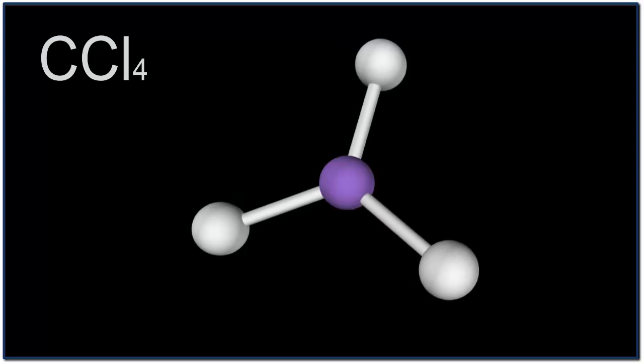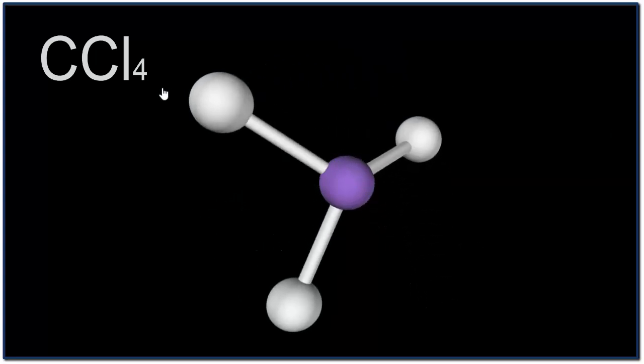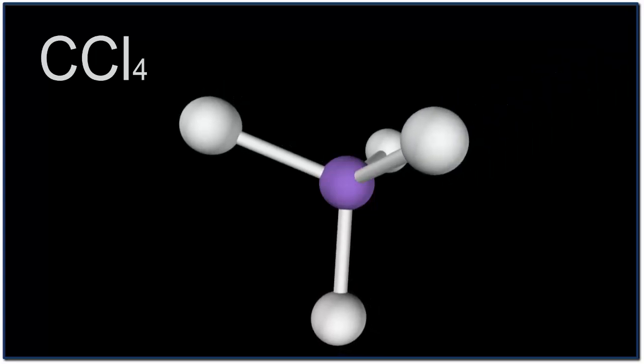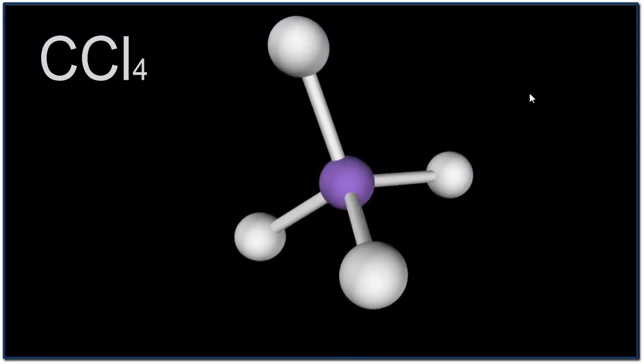If I add another one, they spread out again. And you can see that they're equidistant. And finally, I'll add the fourth Cl, so we have CCl4, and they're spread out in this tetrahedral structure.